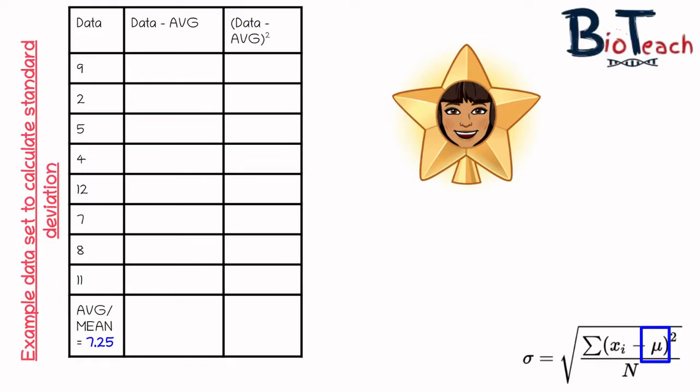So I've got the data 9, 2, 5, 4, 12, 7, 8 and 11 — I haven't put them in chronological order, I've just left them as is. The first thing I've done is worked out the mean, shown in blue — I've added them all together and divided by 8 because my sample size is 8, and I've got 7.25 as my mean.